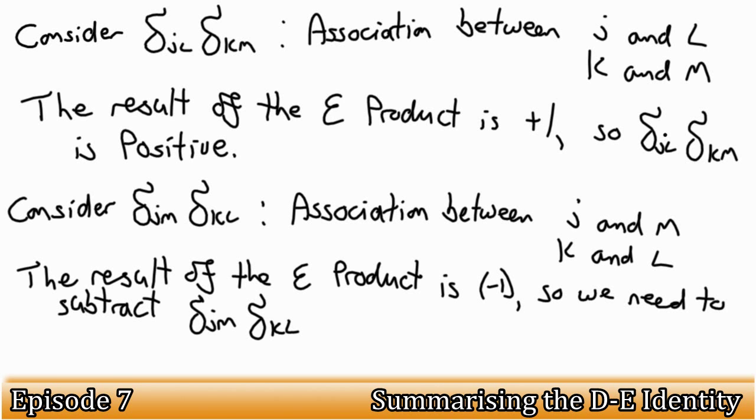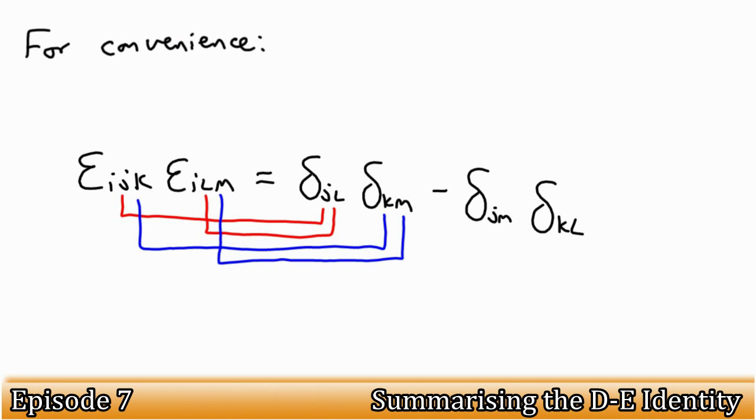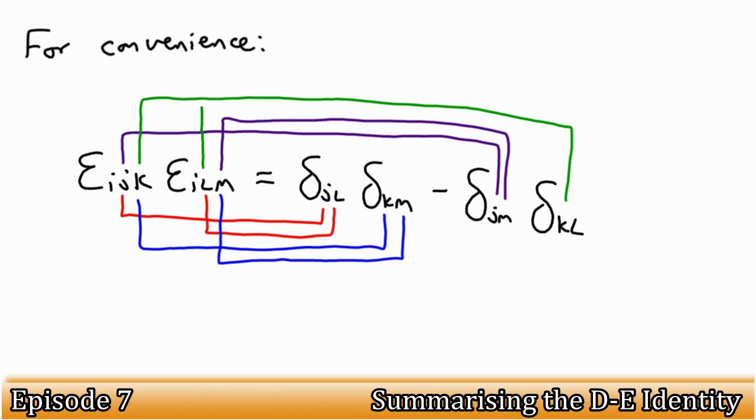Hopefully, how this identity functions is more clear to you now, and it is important that you understand the reasoning why, to get a proper understanding of both the Kronecker delta and epsilon tensors. For convenience, here is a simple way of remembering this identity. The first index of each epsilon goes to one delta, and the second index goes to the other delta of the first term. Then we minus the first index of one epsilon by the second of the other.